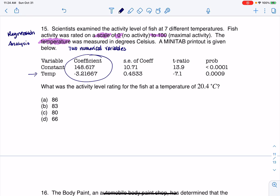So let's take a look at this. It says, 'What was the activity level rating for fish at a temperature of 20.4 degrees Celsius?' The first thing I want to do is set up my LSRL. What that means is I know from here I can predict my activity rating.